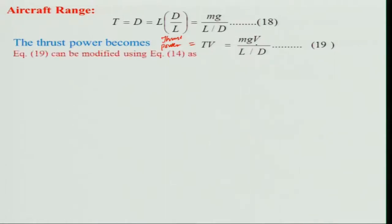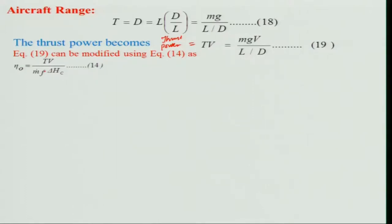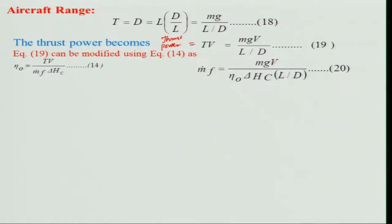We modify this equation using overall efficiency η₀, which is the ratio of thrust power to the heat released from combustion. Substituting, we get: ṁ_f = mg · V / (η₀ · ΔQ_c · (L/D)). This means the mass fuel flow rate depends on aircraft mass, flight velocity, and is inversely proportional to overall efficiency, heat of combustion, and lift-to-drag ratio.